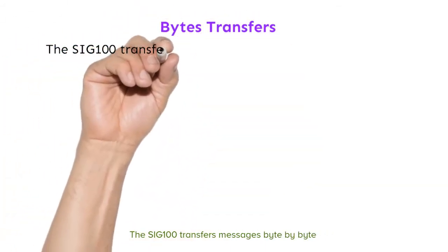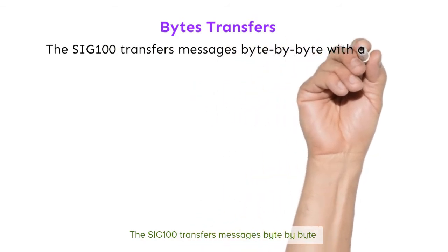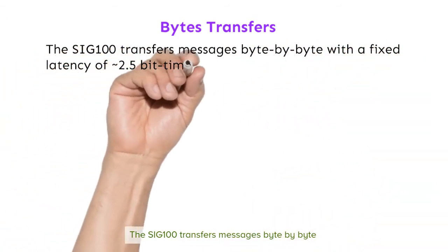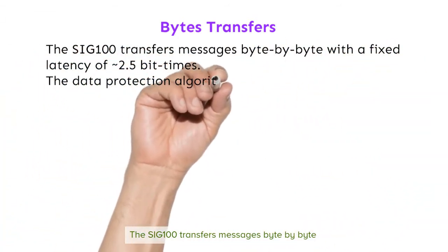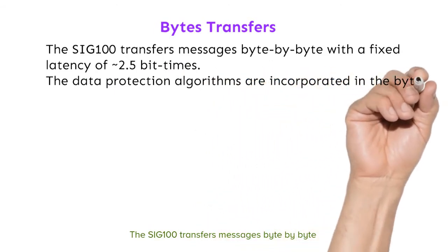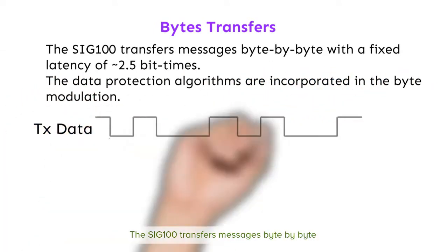The SIG100 transfers messages byte by byte with a fixed latency of approximately 2.5 bit time. The data protection algorithms are incorporated in the byte modulation.